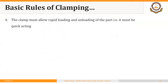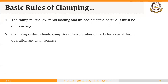The fourth rule is that the clamp must allow rapid loading and unloading of the part — the clamp must be quick acting. That is one of the key features of jigs and fixtures: loading and unloading should be quick, and clamping time should not be excessive. Fifth, the clamping system should comprise a fewer number of parts for ease of design, operation, and maintenance.